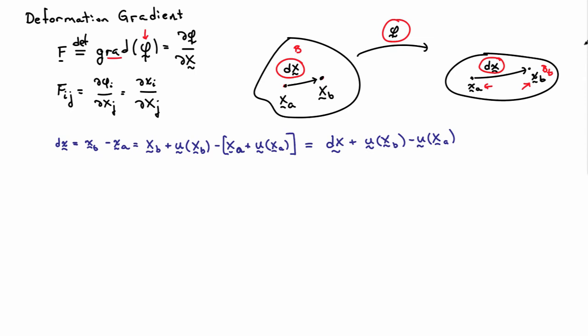Now I can rearrange terms a little bit. Big XB minus big XA is d big X, so I have this term here. And then I just have the two displacement terms, so I have the difference in the displacements between the two points, big XB and big XA.